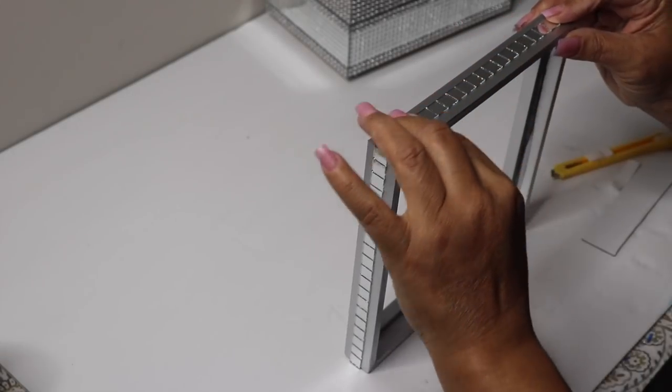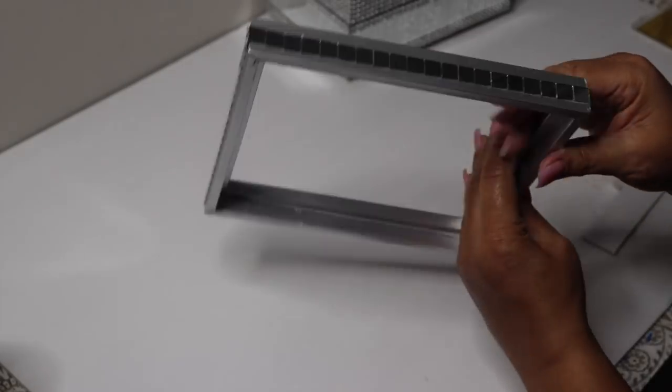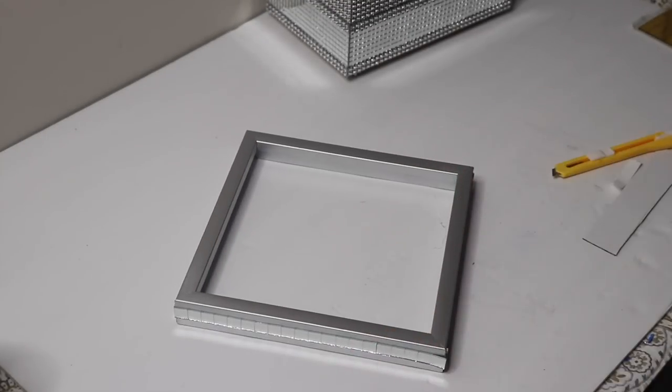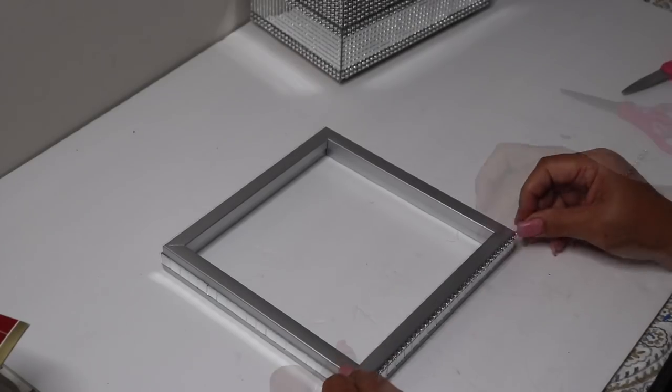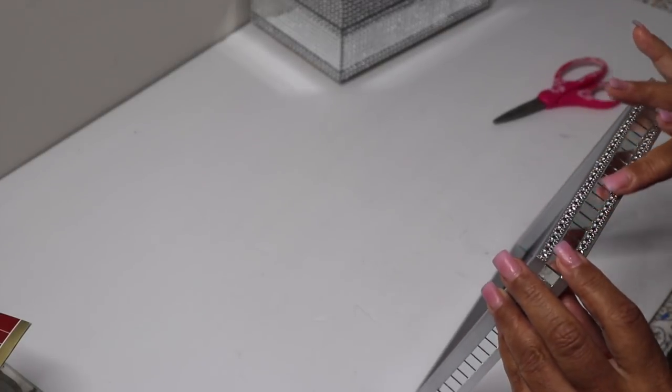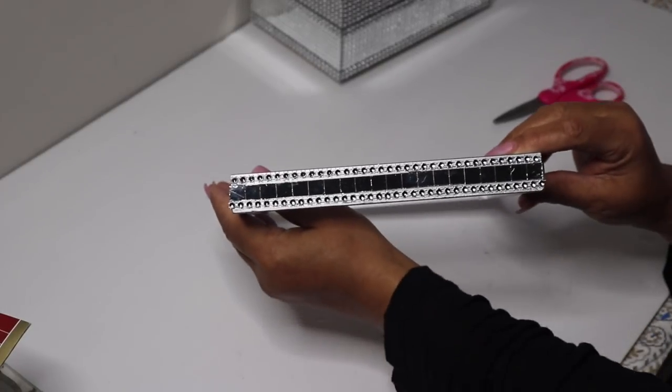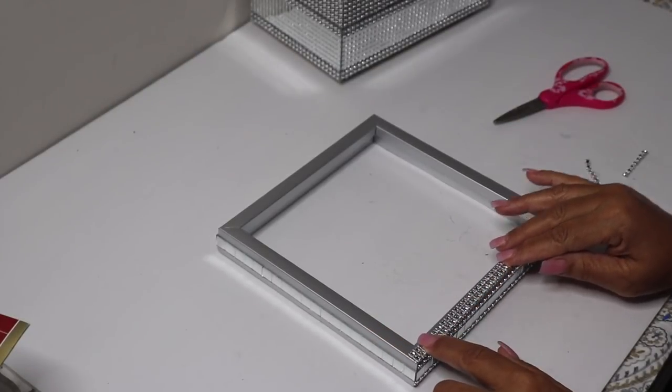Next I'll add bling wrap on both sides of the mirror tiles. I'll decorate each side of the frame the same way. I also glued two rows of bling wrap on top of the lid.